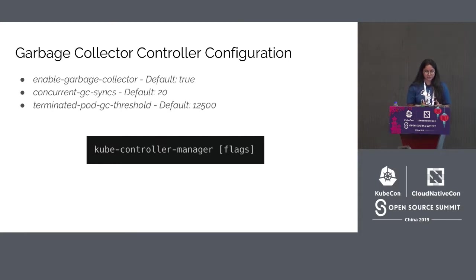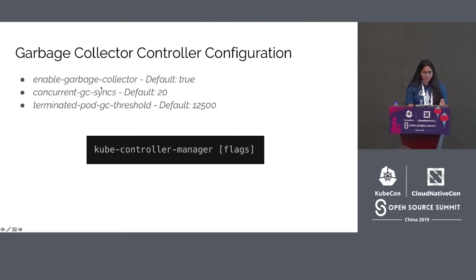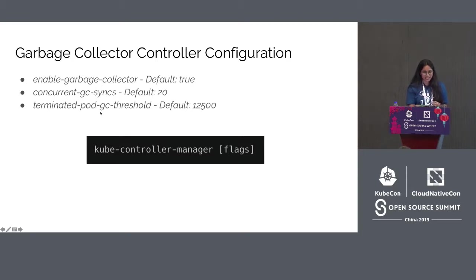The garbage collector controller can be configured via options passed to kube-controller-manager. The key flags include: enable-garbage-collector, which enables the generic garbage collector and defaults to true; concurrent-gc-syncs, the number of garbage collector workers allowed to sync concurrently, defaulting to 20; and terminated-pod-gc-threshold, the number of terminated pods that can exist before the garbage collector starts deleting them, defaulting to 12,500. If this value is less than or equal to 0, the terminated pod garbage collector is disabled.